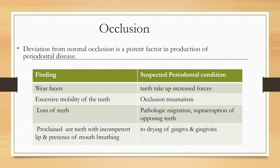Coming to occlusion — deviation from normal occlusion is a potent factor in the production of periodontal disease. Any deviation from normal occlusion can affect the periodontium. There can be various findings suspected with periodontal conditions: wear facets where teeth take up increased forces, and excessive mobility of teeth — that is occlusal traumatism — can occur.